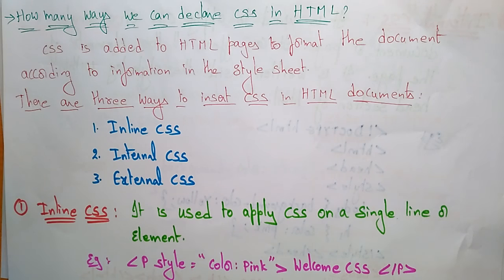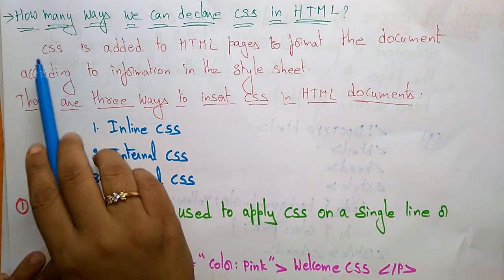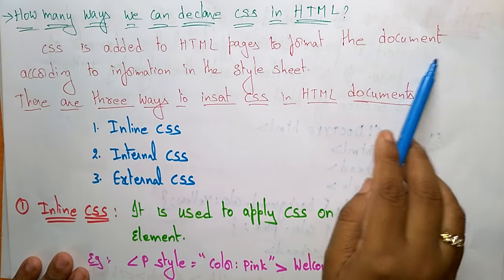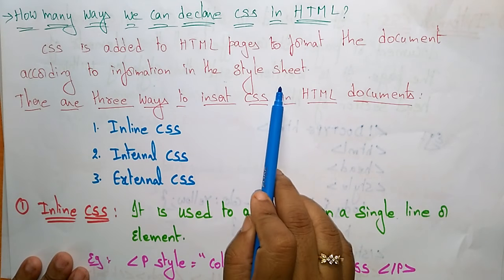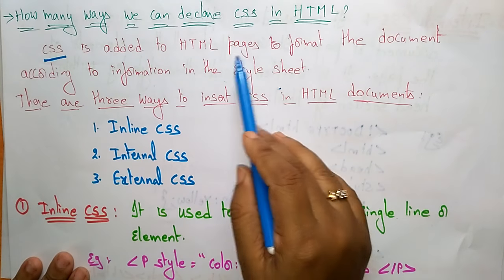Hi everyone. Coming to the next topic: how many ways we can declare cascading style sheets in HTML. With the help of HTML, you can make an HTML document look more beautiful by using cascading styles. The cascading style sheet is added to HTML pages to format the document according to the information in the style sheet — that is the main use of CSS.